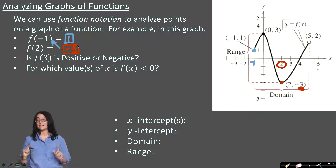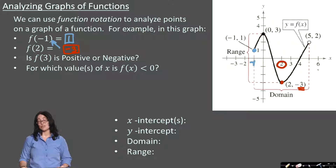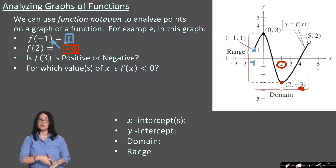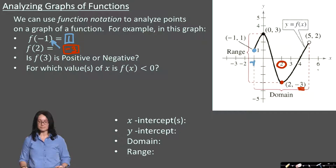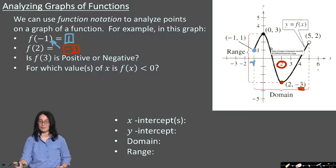Some of you may have been tempted to go to the point on the far right, 5 comma 2, and say the answer was 5. But that would have been the case if I had asked you for the input which gave you the output 2 — that's a different question. And technically, there are a couple of different inputs that give you the output of 2; there's another one over here somewhere.